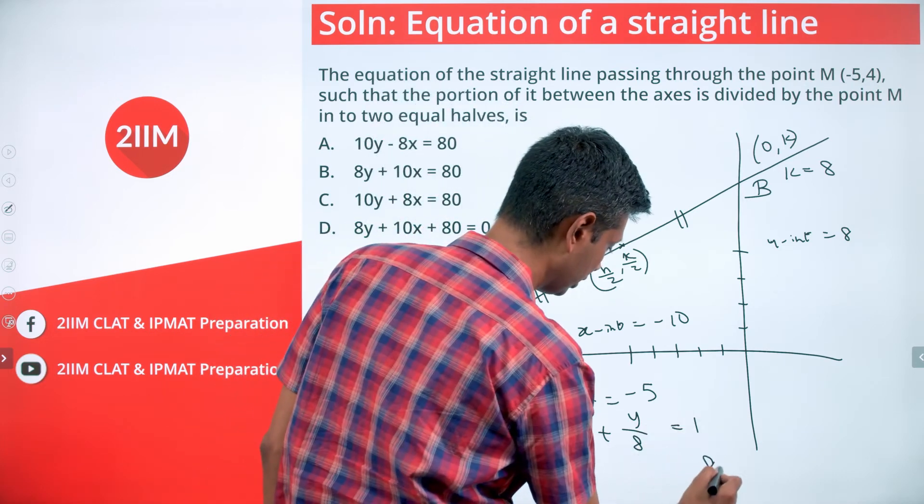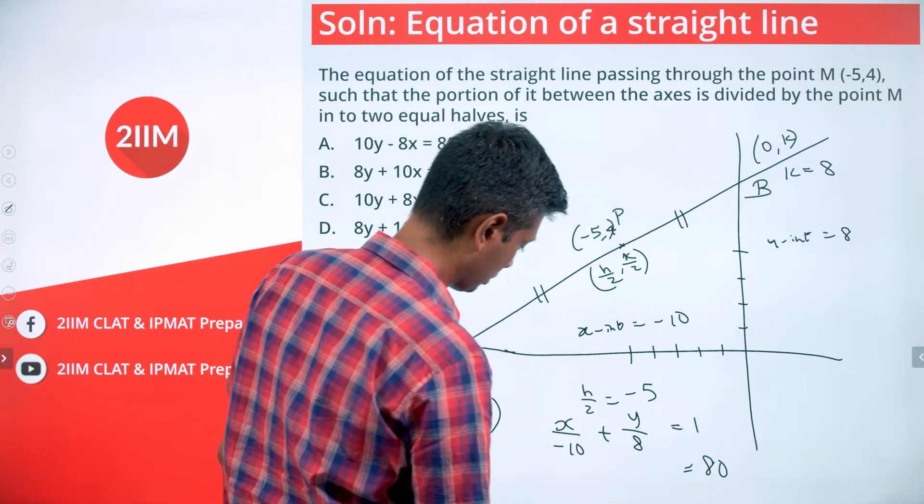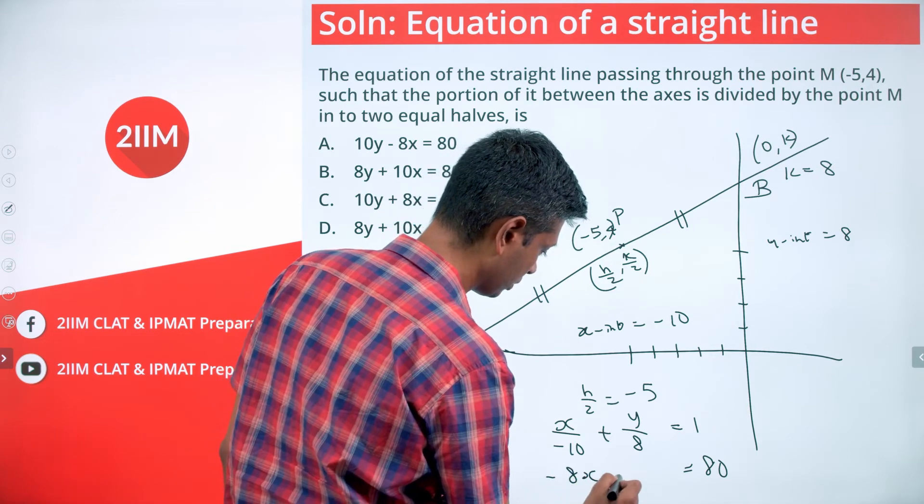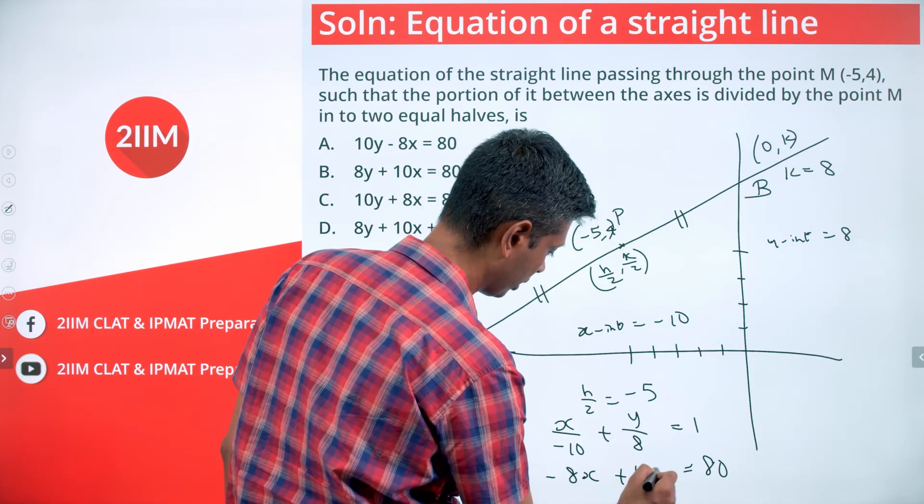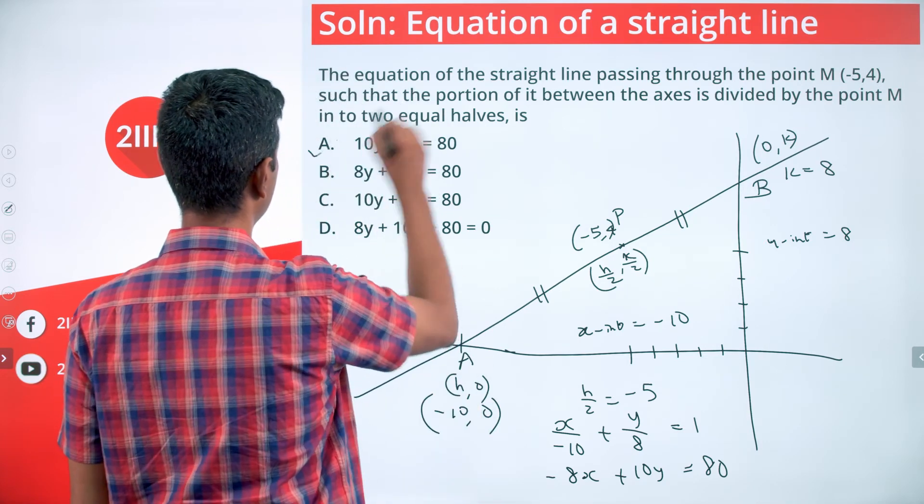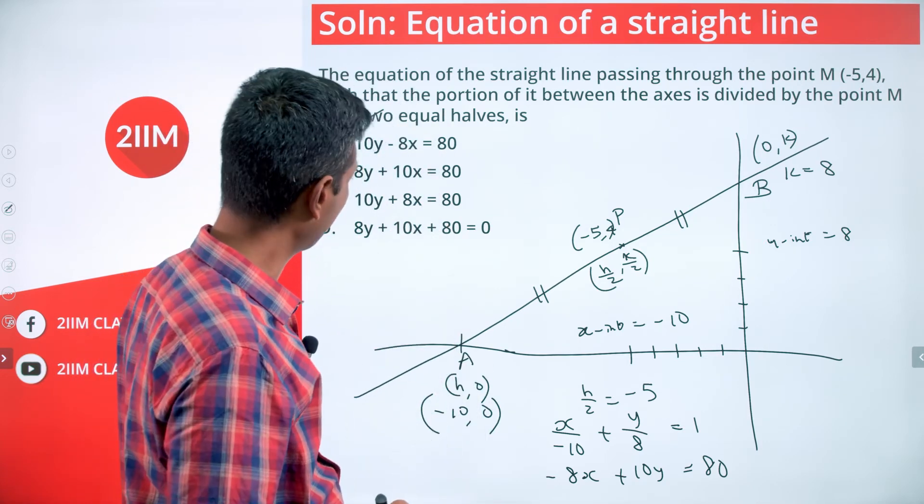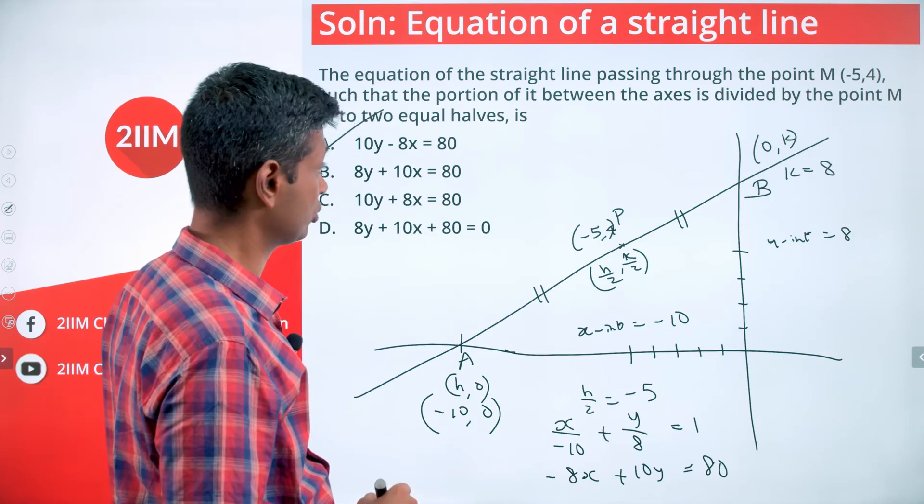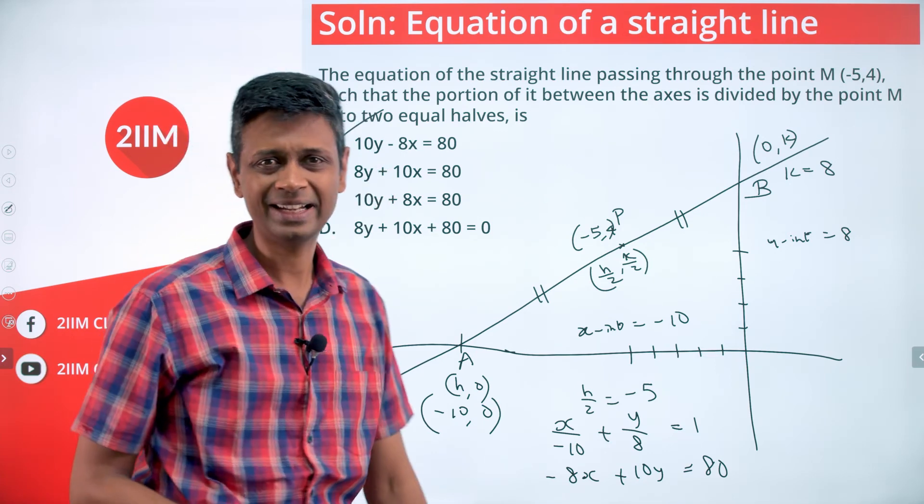Getting in 80 somewhere, so multiply by 80 so that we get an 80 there. -8x + 10y = 80. 10y - 8x = 80. That is fine.